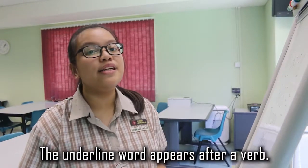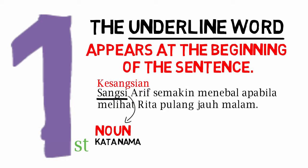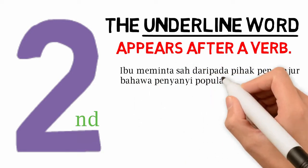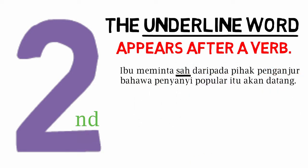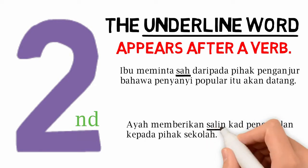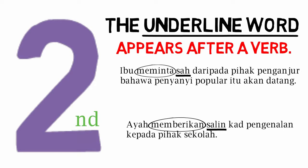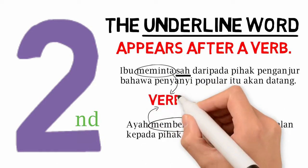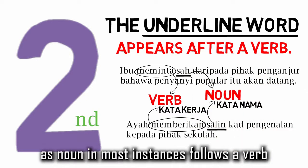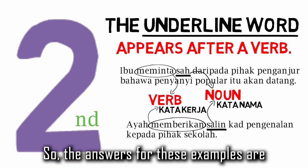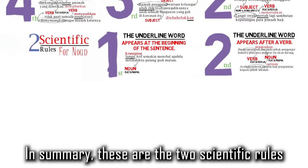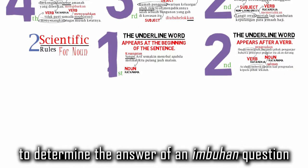The second rule for nouns: the underlined word appears after a verb. For example, 'Ibu meminta sah daripada pihak penganjur bahawa penyanyi popular itu akan datang' and 'Ayah memberikan salin kad pengenalan kepada pihak sekolah.' Meminta and memberikan are verbs, and thus the underlined words sah and salin have to be turned into nouns, as nouns in most instances follow a verb in a sentence. So the answers for these examples are pengesahan and salinan respectively. In summary, these are the two scientific rules to determine the answer of an impohan question is a noun.